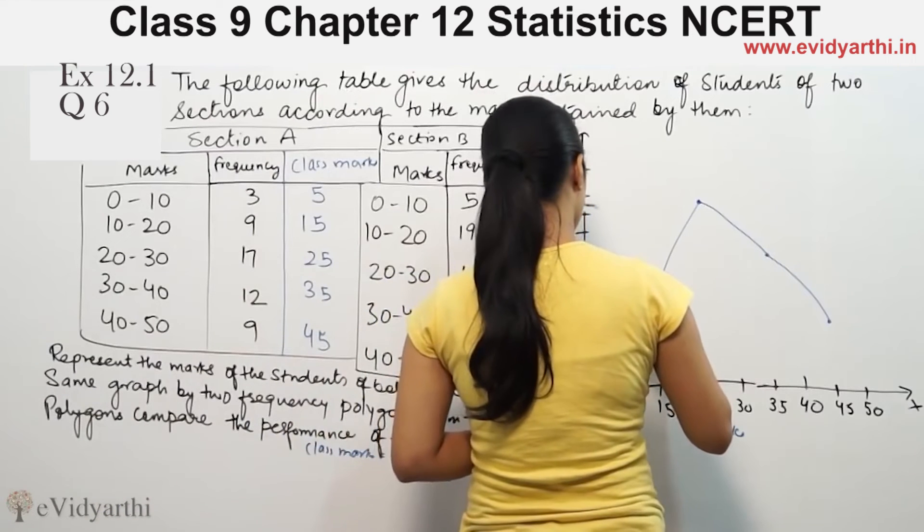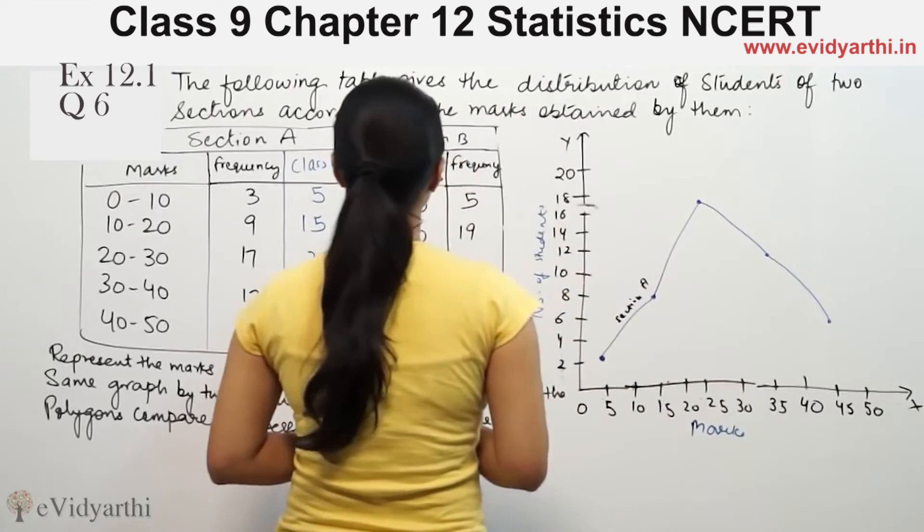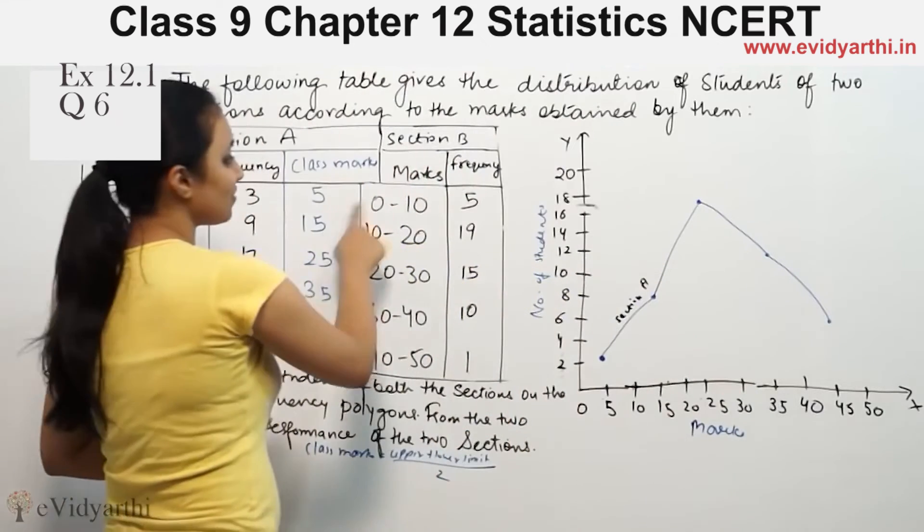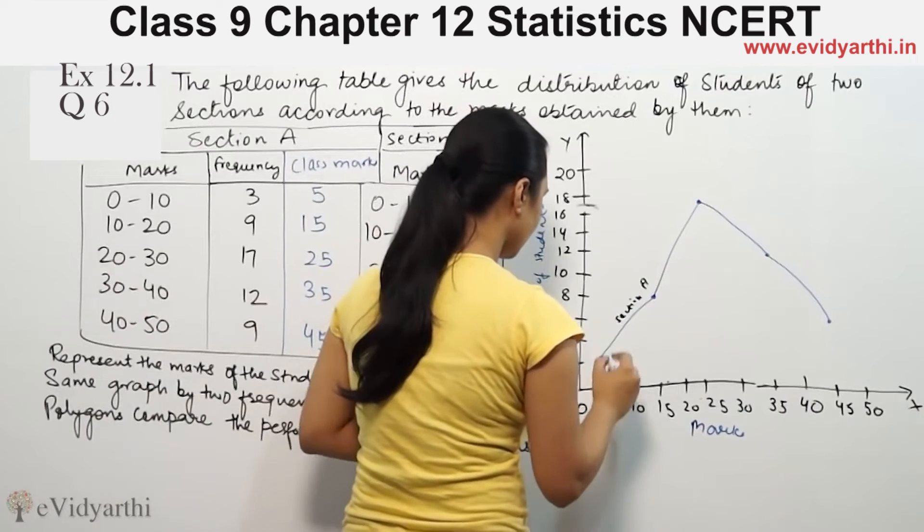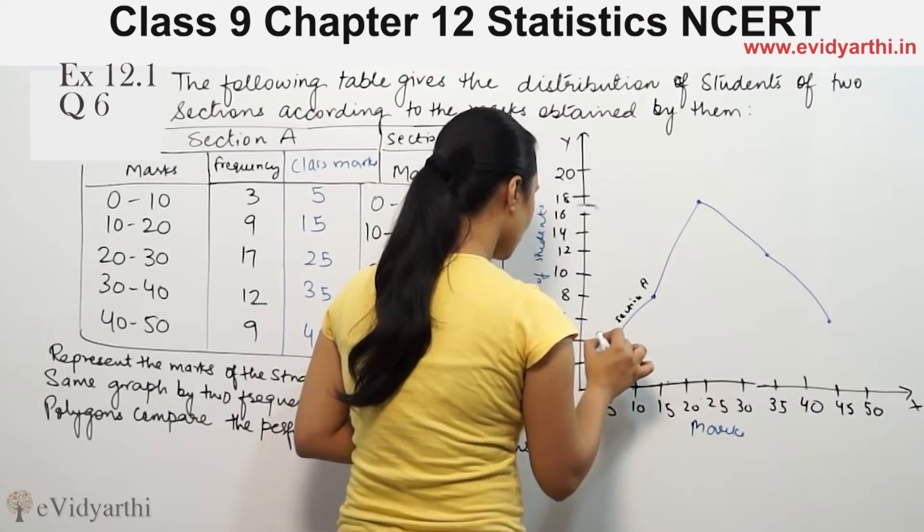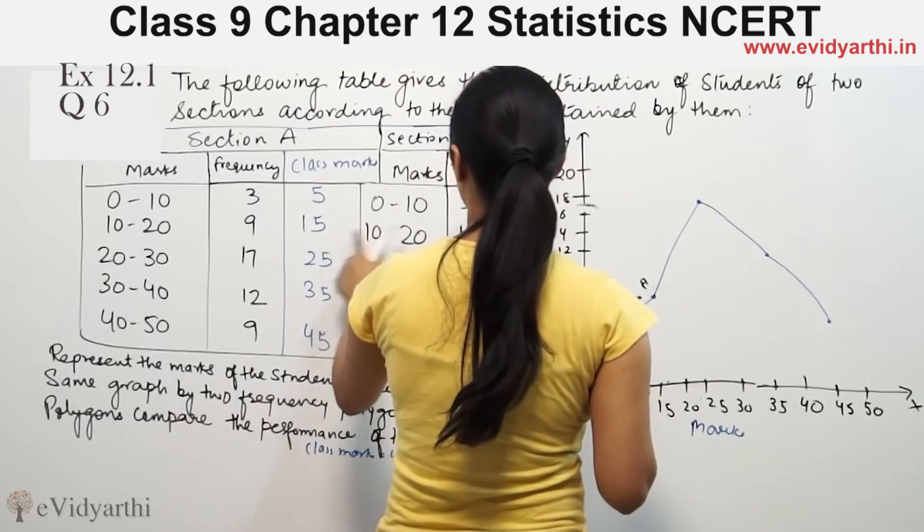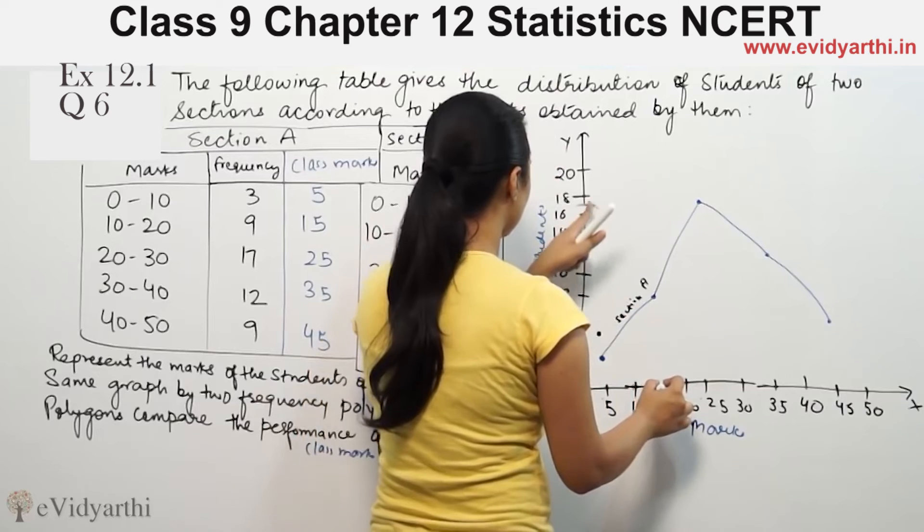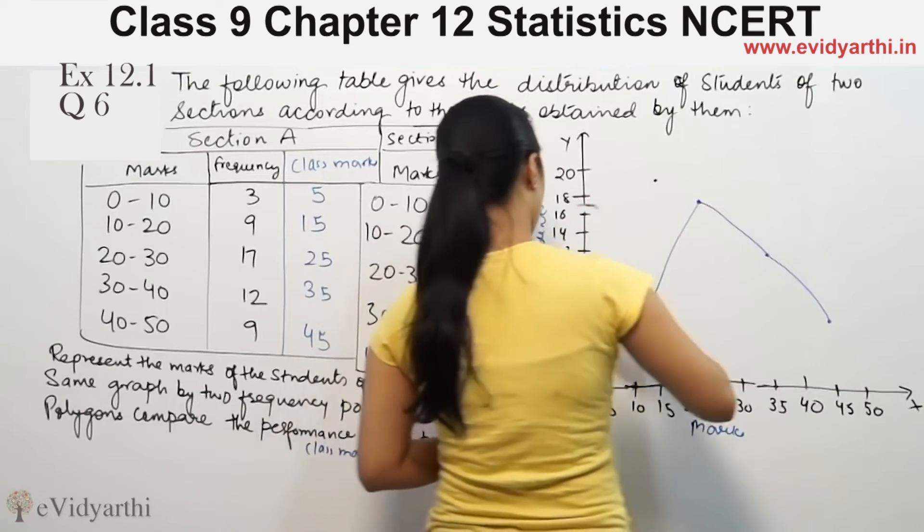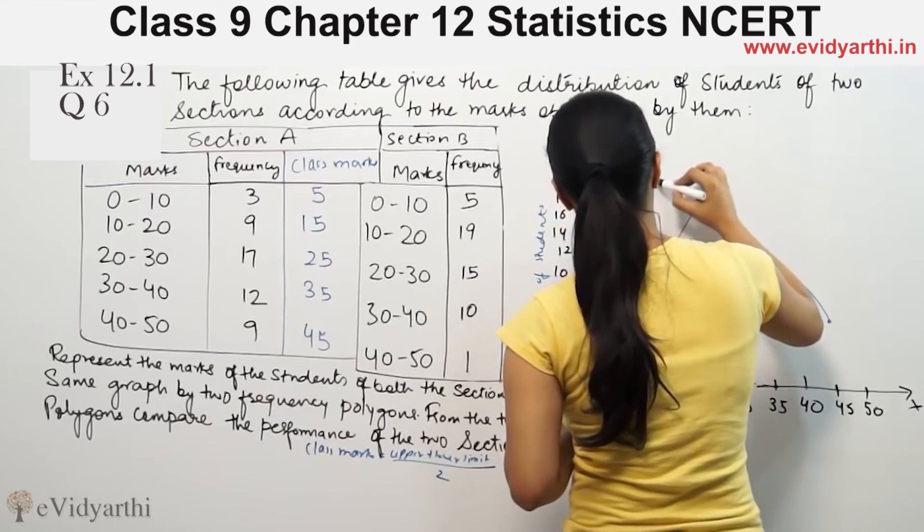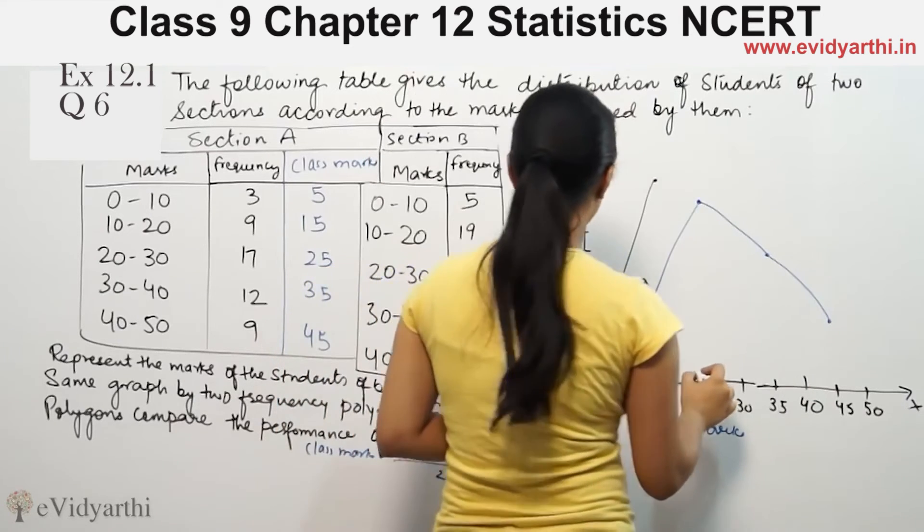Now for Section B, the class marks are the same, but the frequency changes. At 5, the frequency is 5. So I plot 5 and 5. Then at 15, the frequency is 19. So I plot 15 and 19. Then 25 and 15.